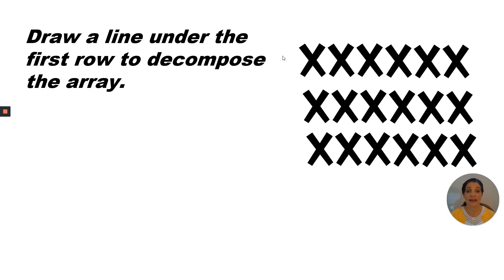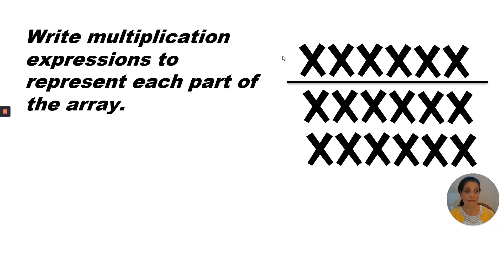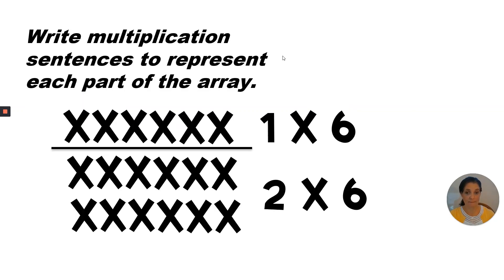Draw a line under the first row to decompose the array. Remember, to decompose means to break it apart. So we're going to draw a line under the first row to break it apart from the rest of the rows. Write multiplication expressions to represent each part of the array. The first part has one row of six — that would be one times six. The second part has two rows of six — that would be two times six.